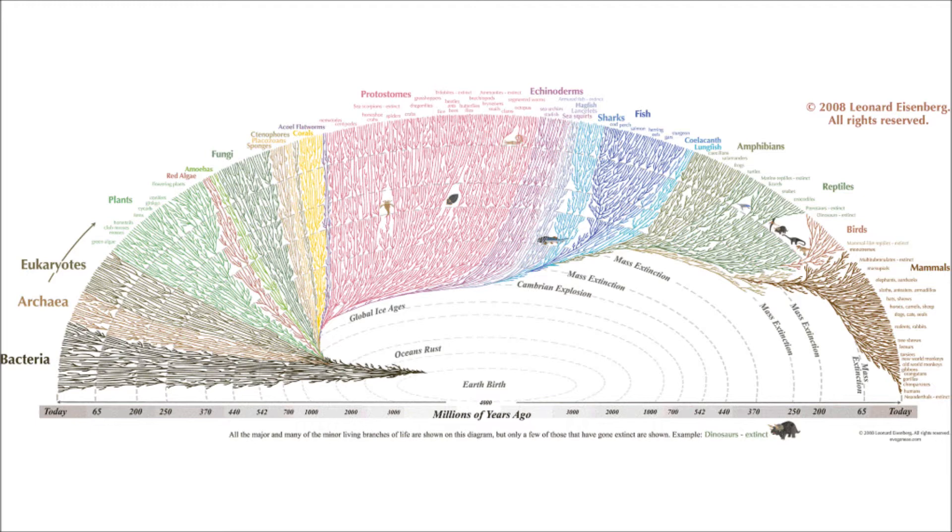It is the plain truth that we are cousins of chimpanzees, somewhat more distant cousins of monkeys, more distant cousins still of aardvarks and manatees, yet more distant cousins of bananas and turnips. Continue the list as long as desired.